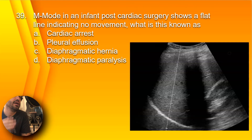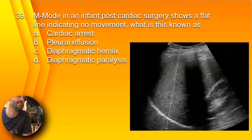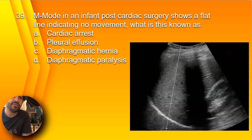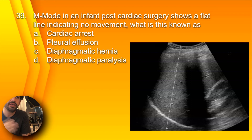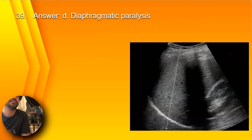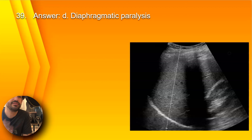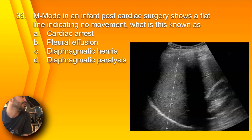Question 39: An M-mode in an infant with post-cardiac surgery shows a flat line indicating no movement while breathing. What is this known as? A, cardiac arrest; B, pleural effusion; C, diaphragmatic hernia; or D, diaphragmatic paralysis? When there is an injury of the phrenic nerve, you can have diaphragmatic paralysis — that's the answer, D. You would M-mode the diaphragms bilaterally to check for movement. A flat line indicates no movement on the diaphragm, indicating diaphragmatic paralysis. Cardiac arrest would not be indicated by this image, and there is no pleural effusion.